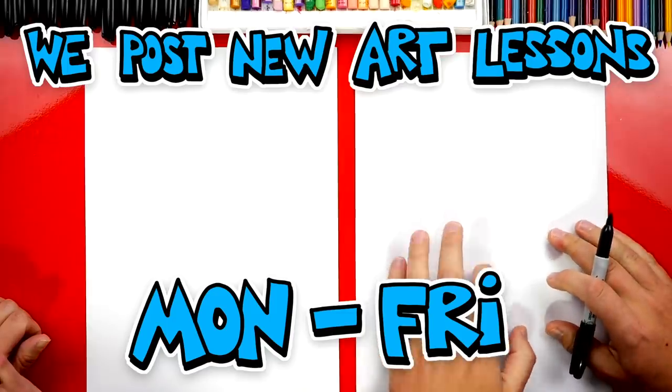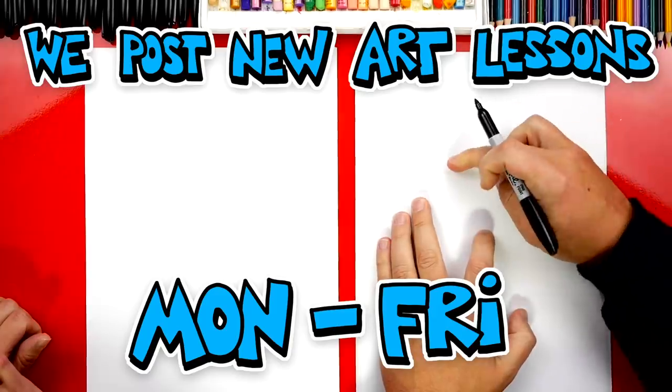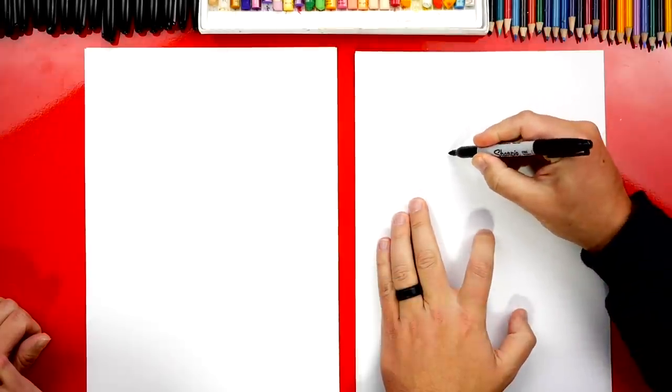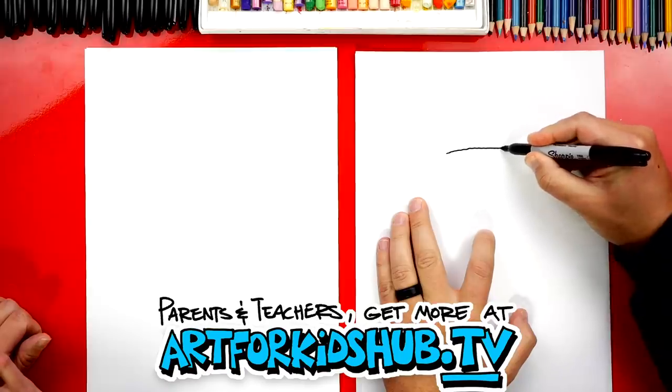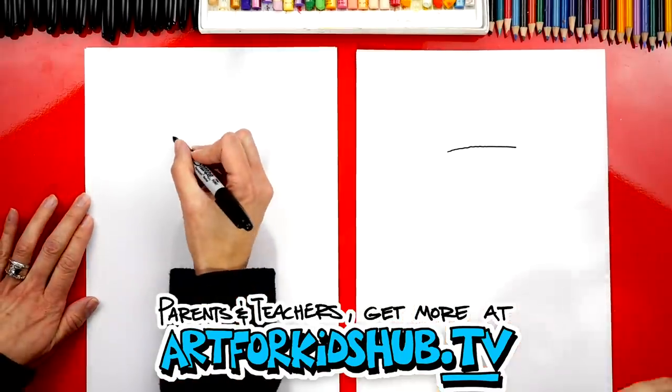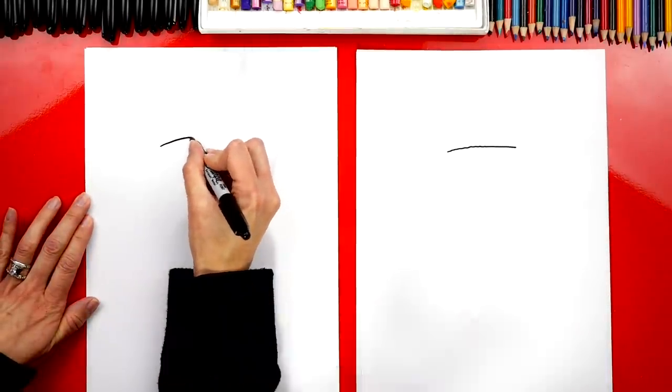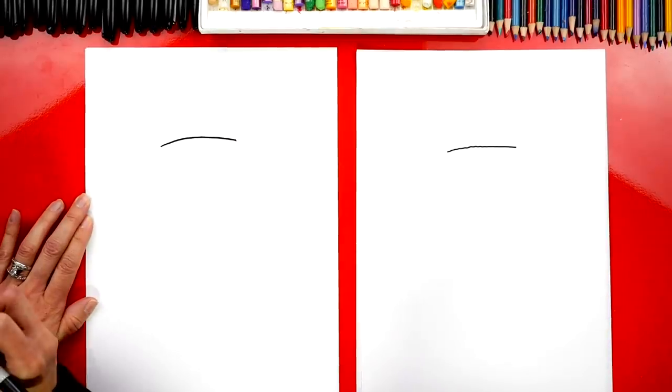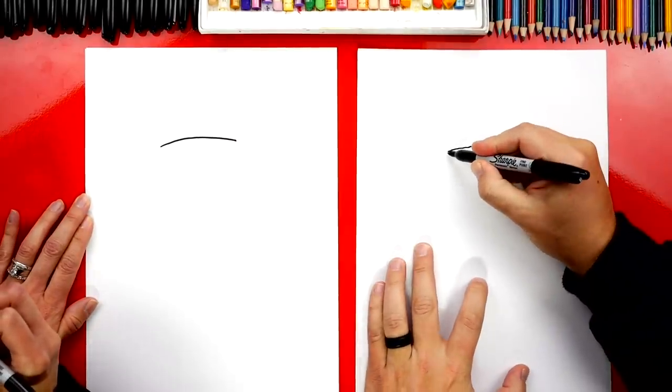We're first gonna draw the collar to our sweater. I'm gonna start up here towards the top of our paper and in the middle, and I'm just gonna draw a line that comes across. Now we're gonna draw the collar, we're gonna draw it really thick because ugly sweaters have super thick necks. Keep your neck warm.